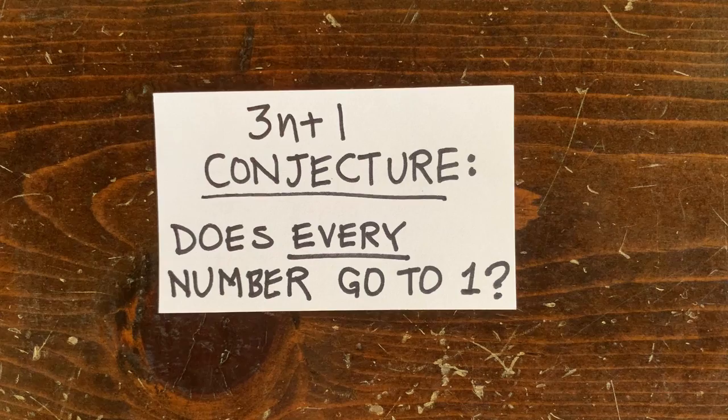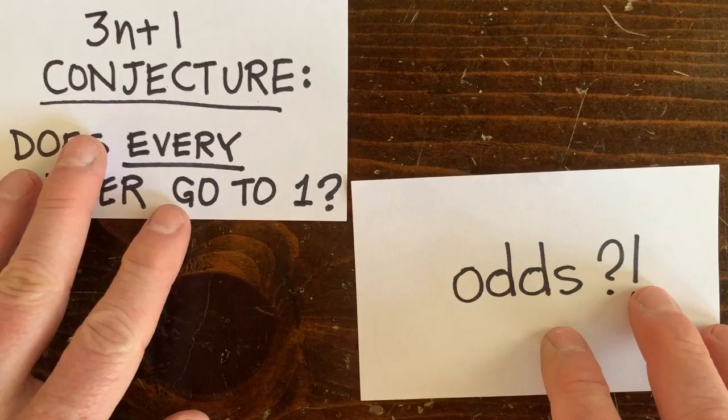But you can imagine that mathematicians with computers have checked a lot of numbers. Actually, they check the first billion billion numbers. And they all go to 1. No loops. You might say, well then, the odds are there aren't any loops ever.